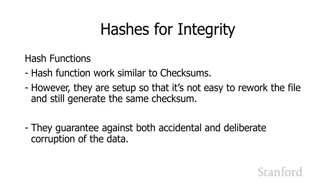As I mentioned, a malicious attacker can manipulate a file in just such a way as to maintain the checksum. So there's another technique we can use called a cryptographic hash. These work similarly to checksums, but in such a way that it's much more difficult for somebody to manipulate a file to end up with the exact same hash. Cryptographic hashes guarantee against both accidental changes — which is what checksums do — and also against deliberate corruption of the data. You will occasionally run into these when you download things from websites, particularly open source software.